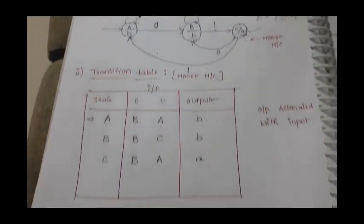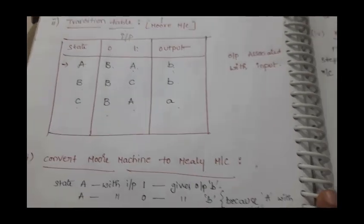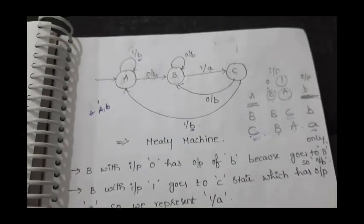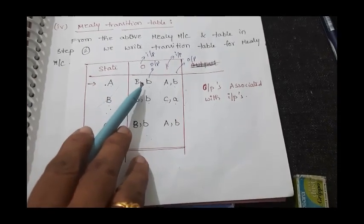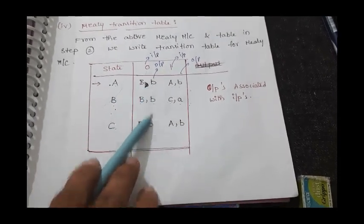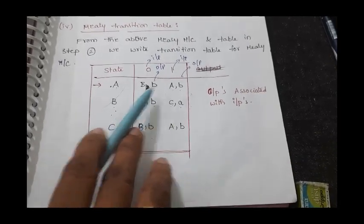This is the Moore machine for the given objective, its transition table, the constructed Mealy machine, and then the Mealy machine transition table. You can observe the difference: in the Moore transition table there is only one output per state, but in the Mealy transition table there are different outputs for different state-input combinations. That is the key difference to observe. Thank you, I hope you understand.